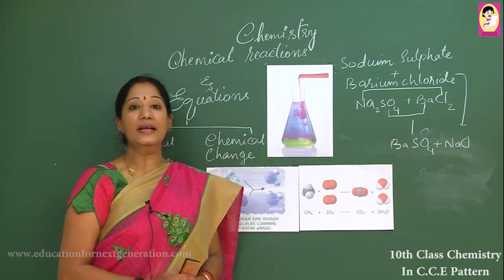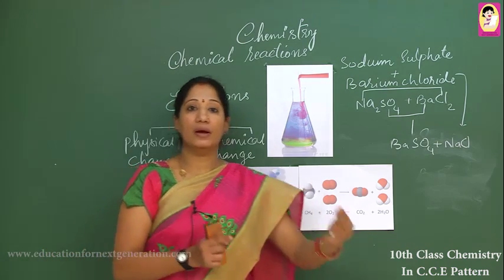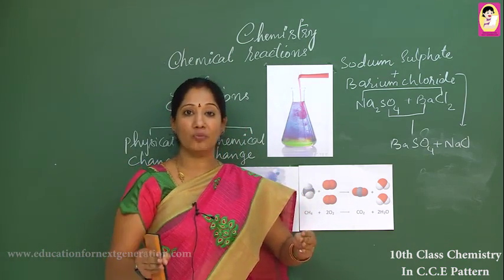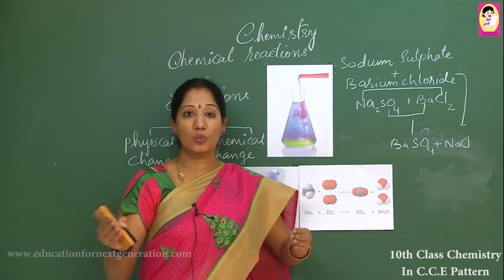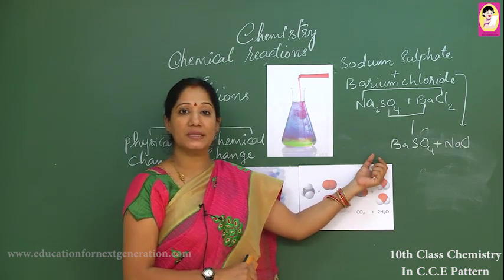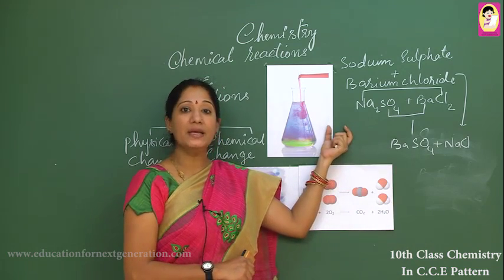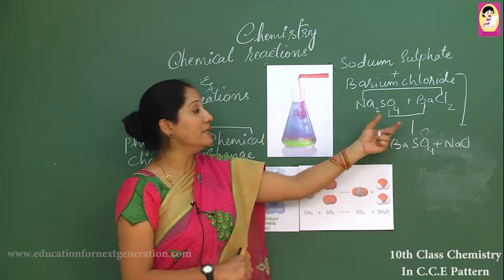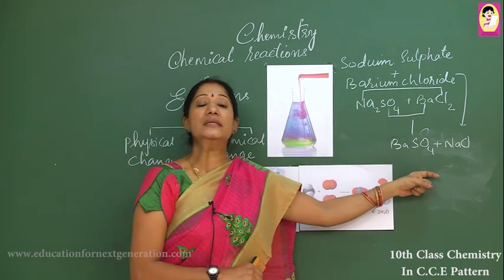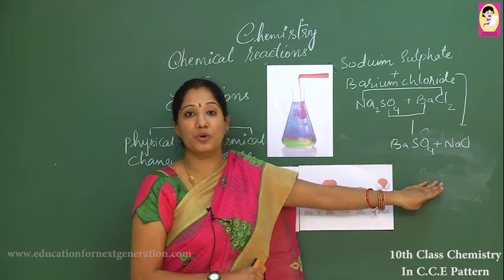A chemical reaction is when one component reacts with a second component — two or more components — to give rise to a new substance. The substance participating in a chemical reaction is called a reactant, and the result of the chemical reaction is called a product.